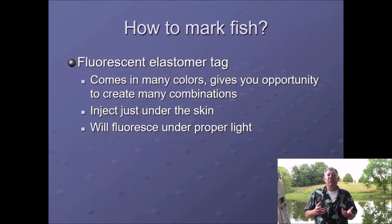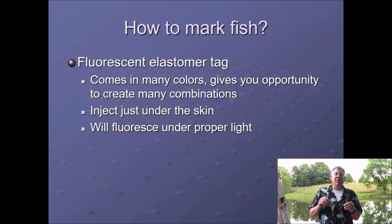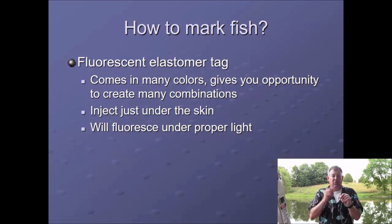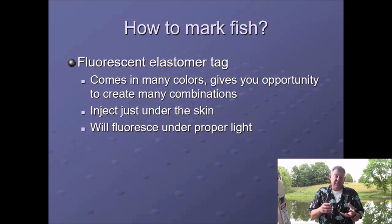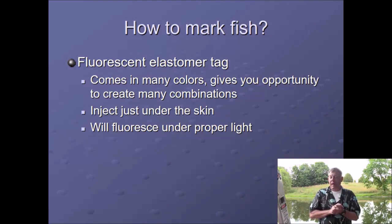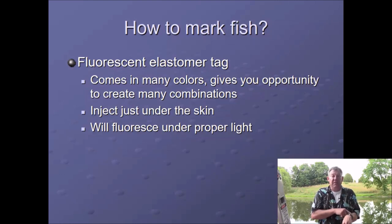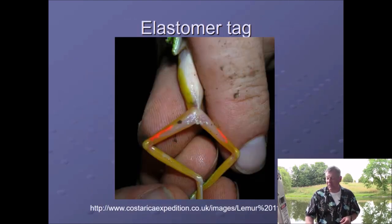Another cool way to mark fish — also used a lot in reptiles — is fluorescent elastomer tags. It's a soft, flexible, non-toxic, non-reactive plastic that when you inject it firms up. It has a number of different colors that will fluoresce if you have the proper light. You can pick up a fish and see the colors, or shine a light in clear water and look for them to fluoresce. You put it just under the skin — it's really not very invasive. They put them on the cheeks of fish a lot of times, sometimes in the fins, and you can use different combinations of colors in different locations to mark different batches. Here's a picture of a frog showing the nice little orange bands.